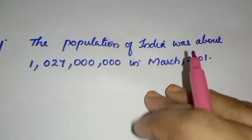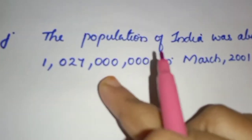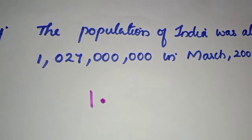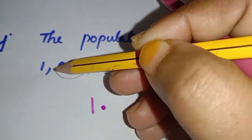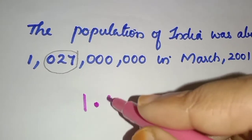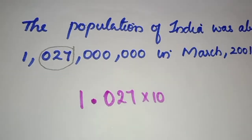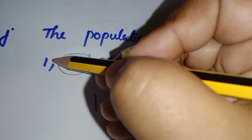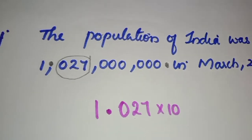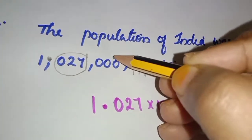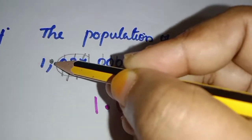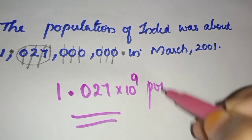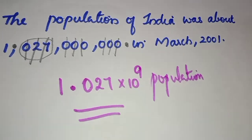Last question: the population of India was about 1,027,000,000 in March 2001. Using the standard formula, we write 1.027 into 10 to the power. Counting the places: 1, 2, 3, 4, 5, 6, 7, 8, 9. So the answer is 1.027 × 10^9. These are the basic questions.